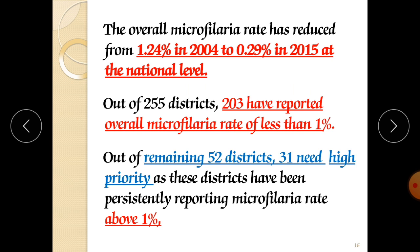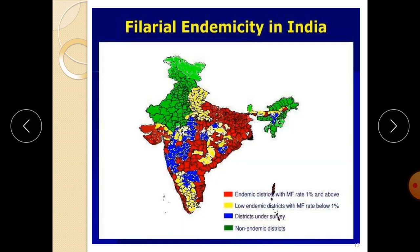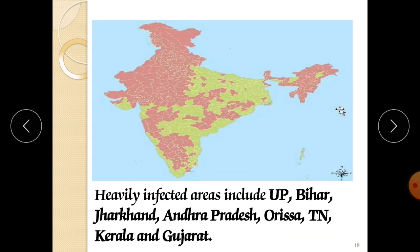Out of 255 districts, 203 have reported an overall microfilaria rate of less than 1%. Out of the remaining 52 districts, 31 need high priority as they have been persistently reporting microfilaria rates above 1%. In India, filariasis is found mostly in Bihar, Jharkhand, Odisha, West Bengal, Chhattisgarh, parts of MP, Karnataka, Andhra, and parts of Gujarat. Heavily infected areas include UP, Bihar, Jharkhand, Andhra, Odisha, Tamil Nadu, Kerala, and Gujarat.